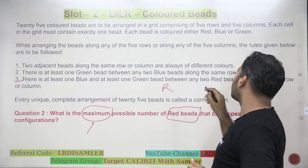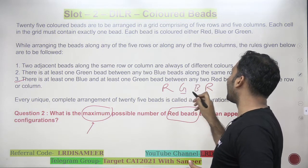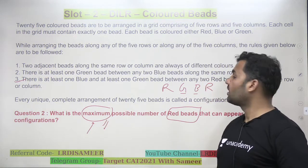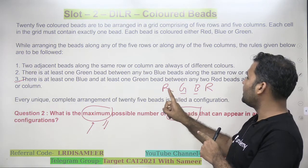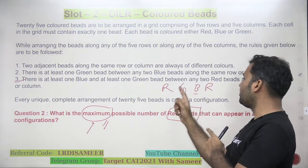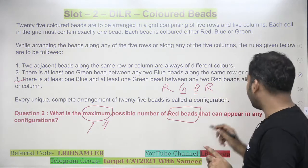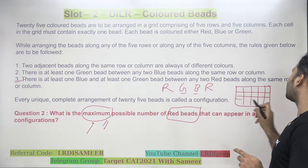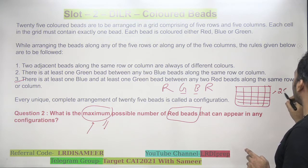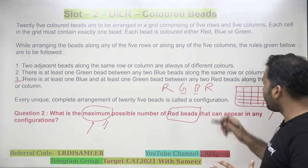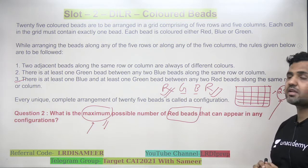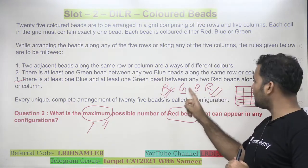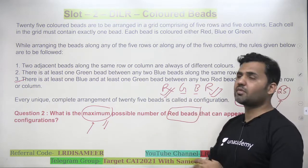What condition 3 says is that between any 2 red beads, I need at least 1 green and 1 blue. To maximize red beads, I need to minimize the number of green and blue between the two reds, because in a 5x5 matrix the number of cells is limited to 25. Minimizing non-red beads lets us place red at the maximum number of cells.